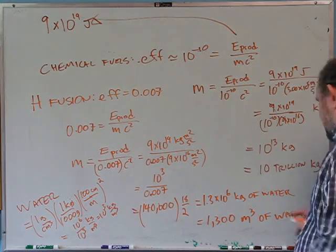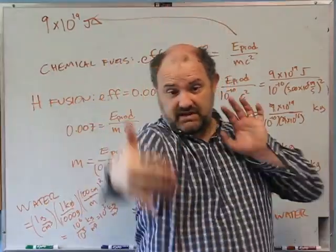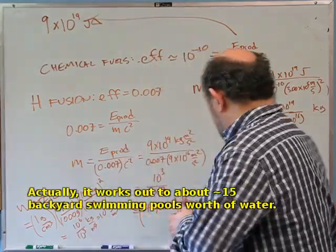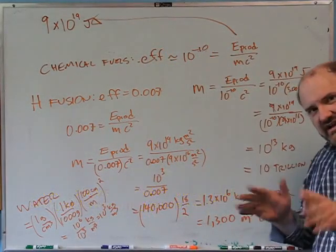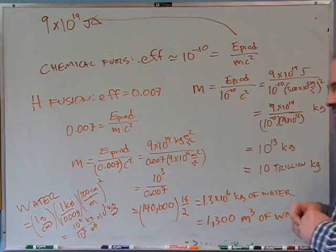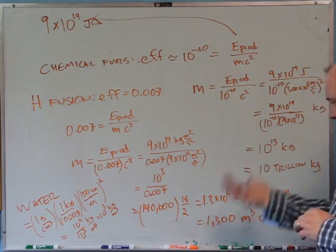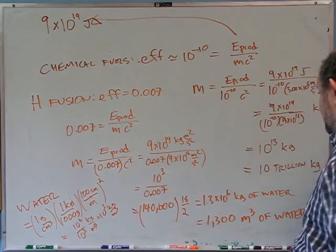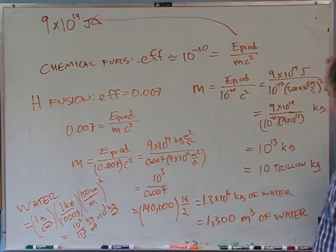1300 cubic meters of water — one cubic meter is roughly a meter on each side, and we need 1300 of those. That's probably only a couple of swimming pools worth of water. If we could do hydrogen fusion, we could power the entire United States for a year, and we'd get all this oxygen and helium as byproducts — good for balloons and talking high.